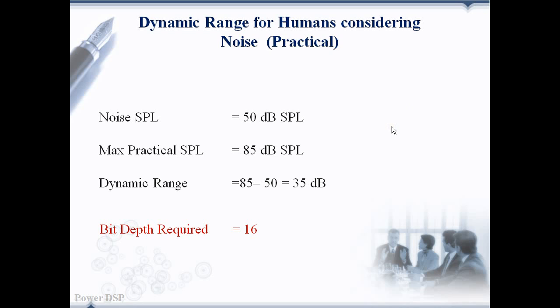For example, the normal and average listening environmental noise is around 50 dB SPL. The dynamic range in such case is only 35 dB. It doesn't mean that we can reduce the bit depth to meet this dynamic range. We have to stick to the bit depth of 16 to cover the human practical dynamic range of 85 dB.